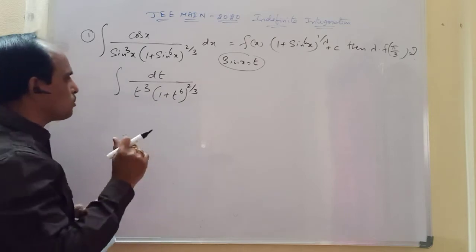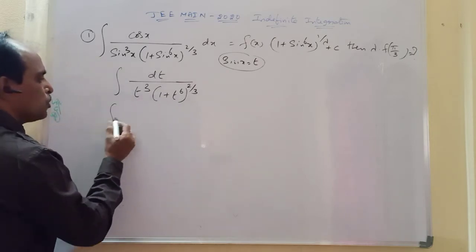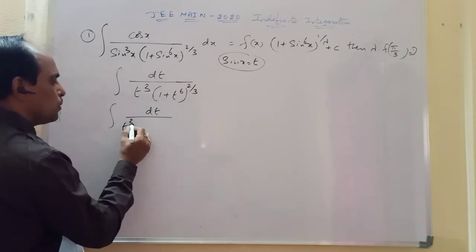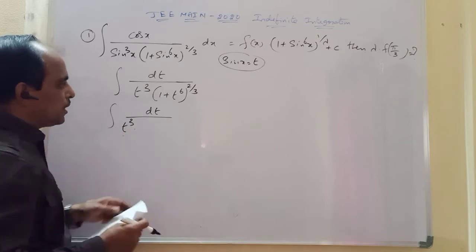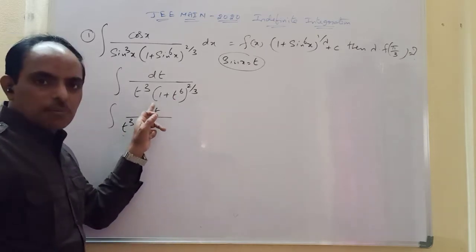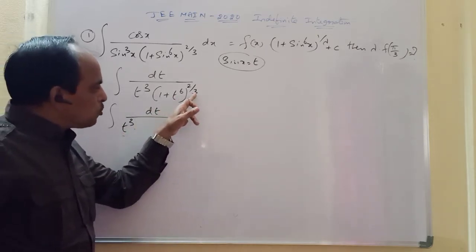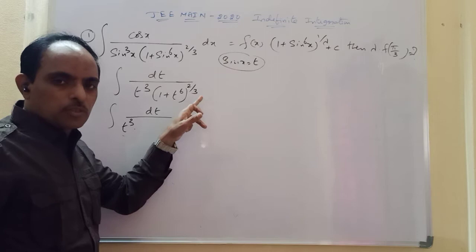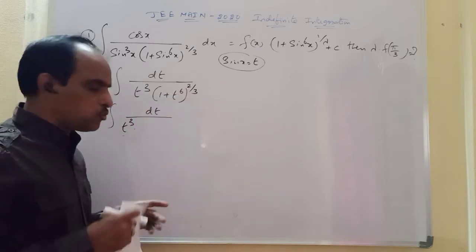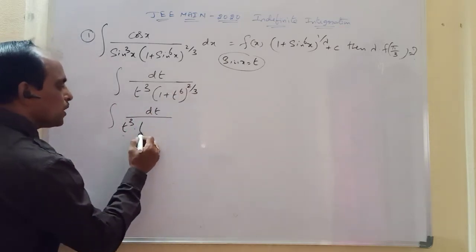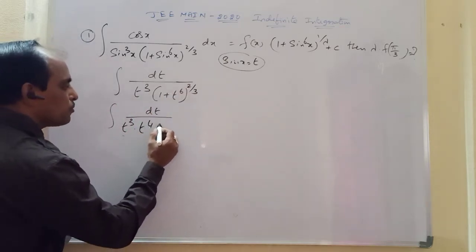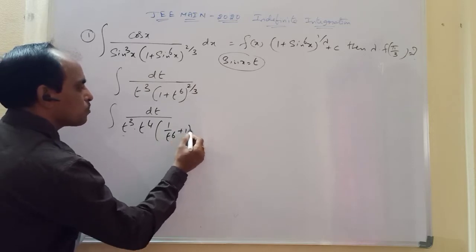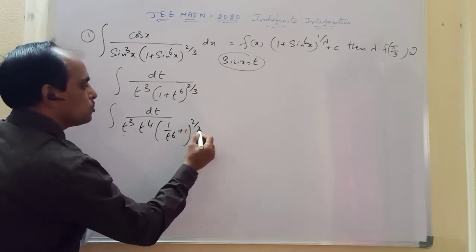After simplification you will get 1/t⁴ and the expression involves (1/t⁶ + 1) raised to the power of 2/3.